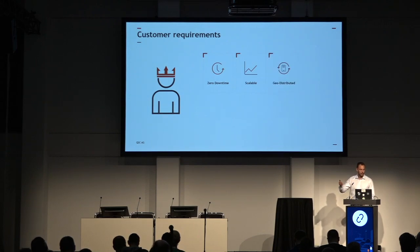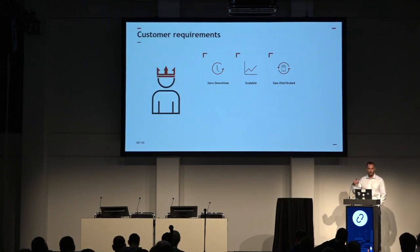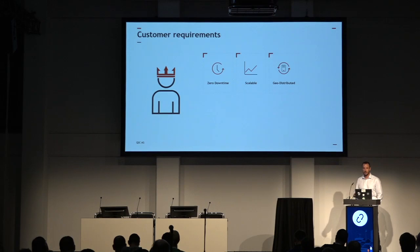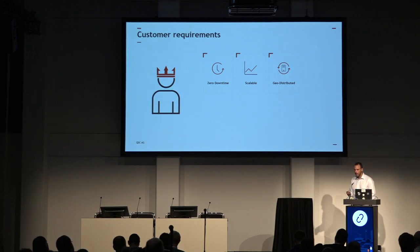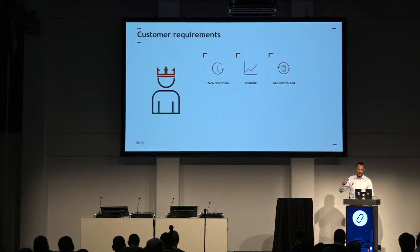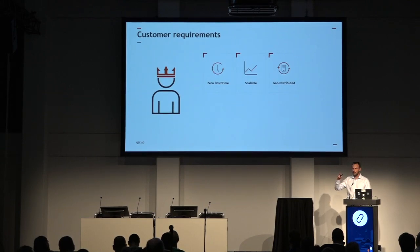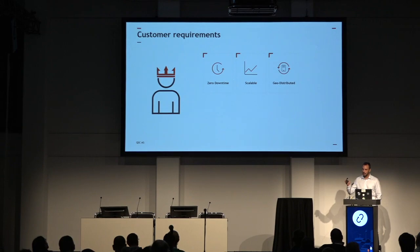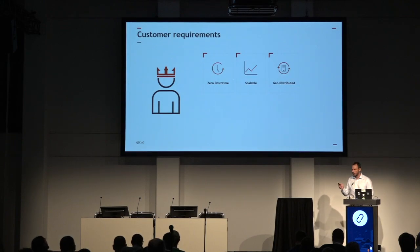A new requirement is geo-distribution. In the last presentation from Red Hat we heard about edge computing, and today there were many presentations on edge computing and 5G. That's the reason why customers need applications deployed in many data centers around the country or around the world. We are a local German vendor, so we can only deploy servers in Germany, but it's a hard requirement for customers to deploy software and infrastructure in different data centers.